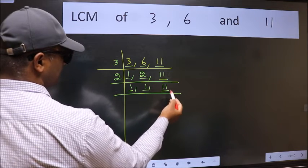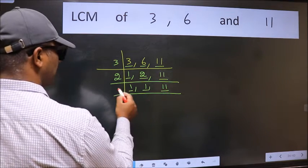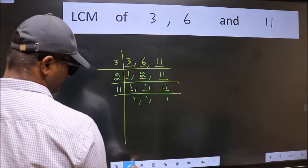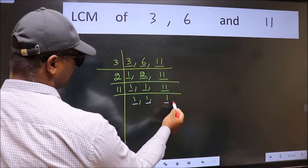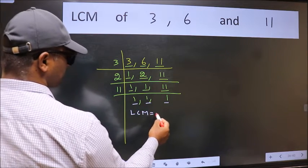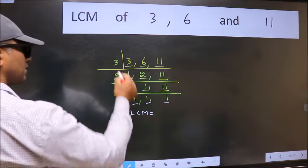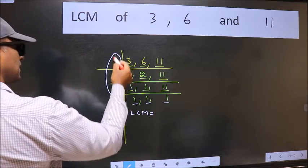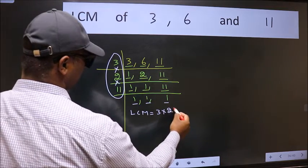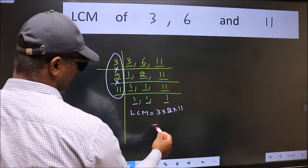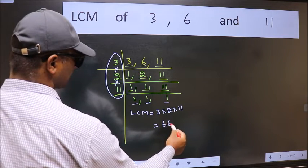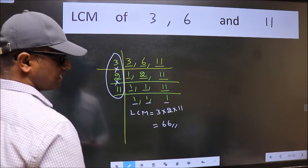Now we got 1 here and here. So focus on the next number, 11. 11 is a prime number, so 11 divides by 11. We got 1 in all 3 places. So our LCM is the product of these numbers: 3 times 2 times 11. When we multiply these numbers, we get 66. So 66 is our LCM.